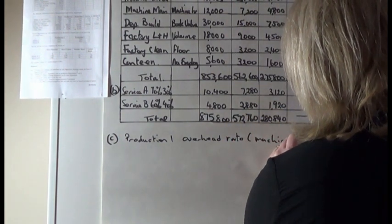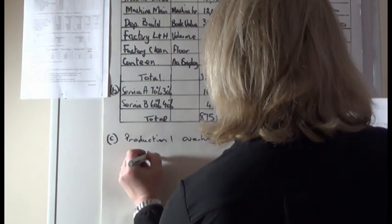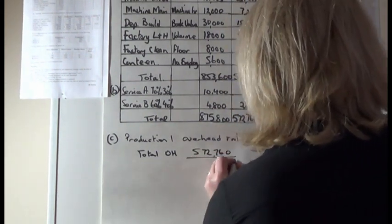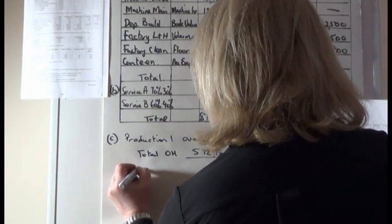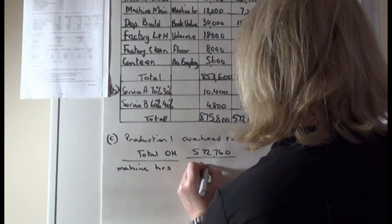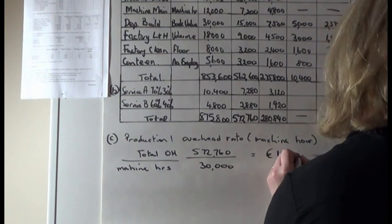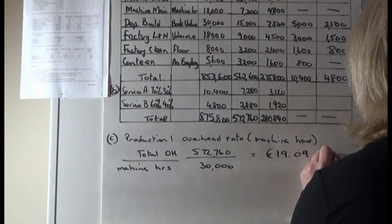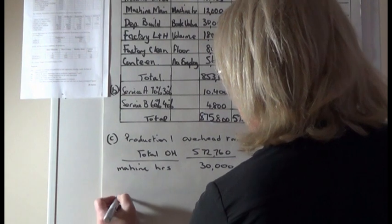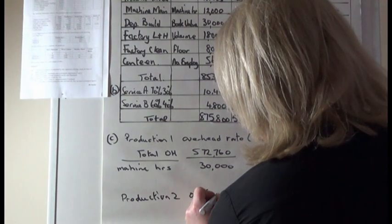For Production 1, since machine hours are higher, we use the machine hour overhead rate. I state that clearly for the examiner. Taking the total overheads of 572,760 from Part B and dividing by the 30,000 machine hours gives a rate of 19.09 per machine hour.